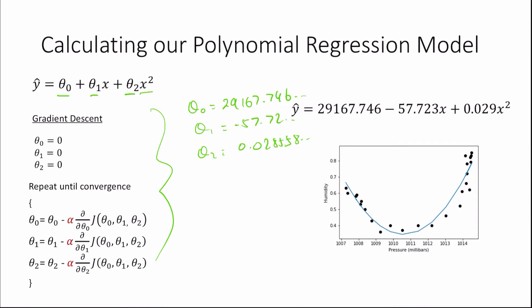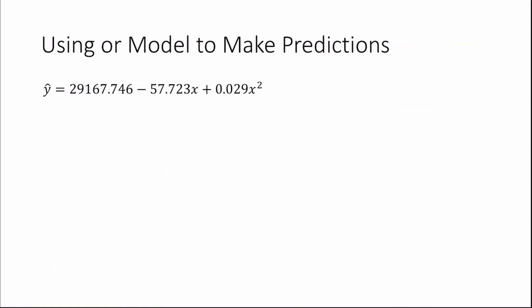So lastly, we're going to use our model to make some predictions. Let's say, for example, we want to define what kind of humidity we could expect from a pressure of around 1007 millibars.